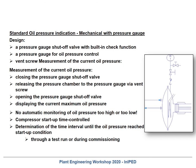Let's talk about the standard oil pressure indication — a mechanical one with a pressure gauge design. The pressure gauge shut-off valve is built in with a check function, installed manually. A pressure gauge for oil pressure control and a vent screw for measurement of the current oil pressure are the features needed. The measurement of the current oil pressure is done manually by these steps: close the pressure gauge shut-off valve, release the pressure chamber to the pressure gauge via the vent screw, open the pressure gauge shut-off valve again, and display the current maximum oil pressure — which shows the maximum oil pressure during one revolution by means of this check valve.